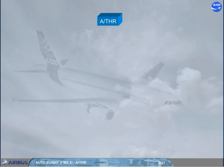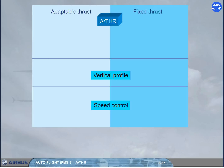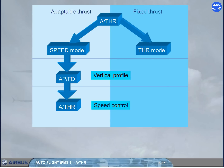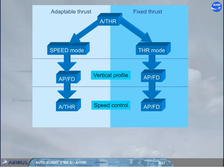The autothrust can work in two different modes. In speed mode, the autothrust continuously adjusts the thrust in order to maintain a target speed or Mach — e.g., during cruise or approach. In thrust mode, the autothrust sets a given thrust — e.g., max climb or idle.